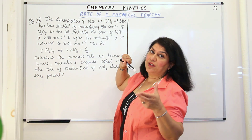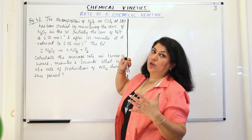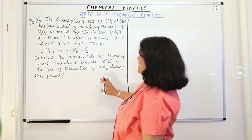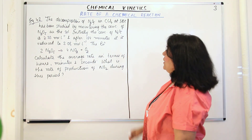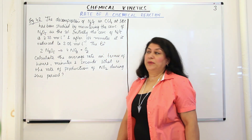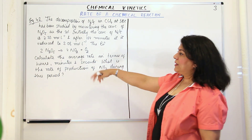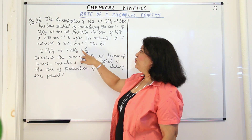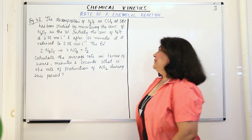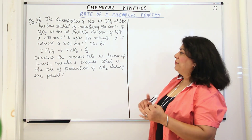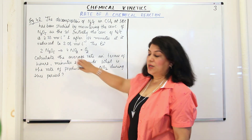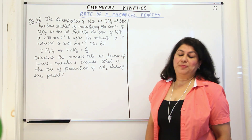The duration has been given to us — initial time and final time were not given separately, but delta T is what you would have calculated anyway. The reaction is represented by: 2N2O5 gives 4NO2 plus O2, and all are gaseous reactants and products. You have to calculate the average rate in terms of hours, minutes, and seconds, and also find the rate of production of NO2 during this period.